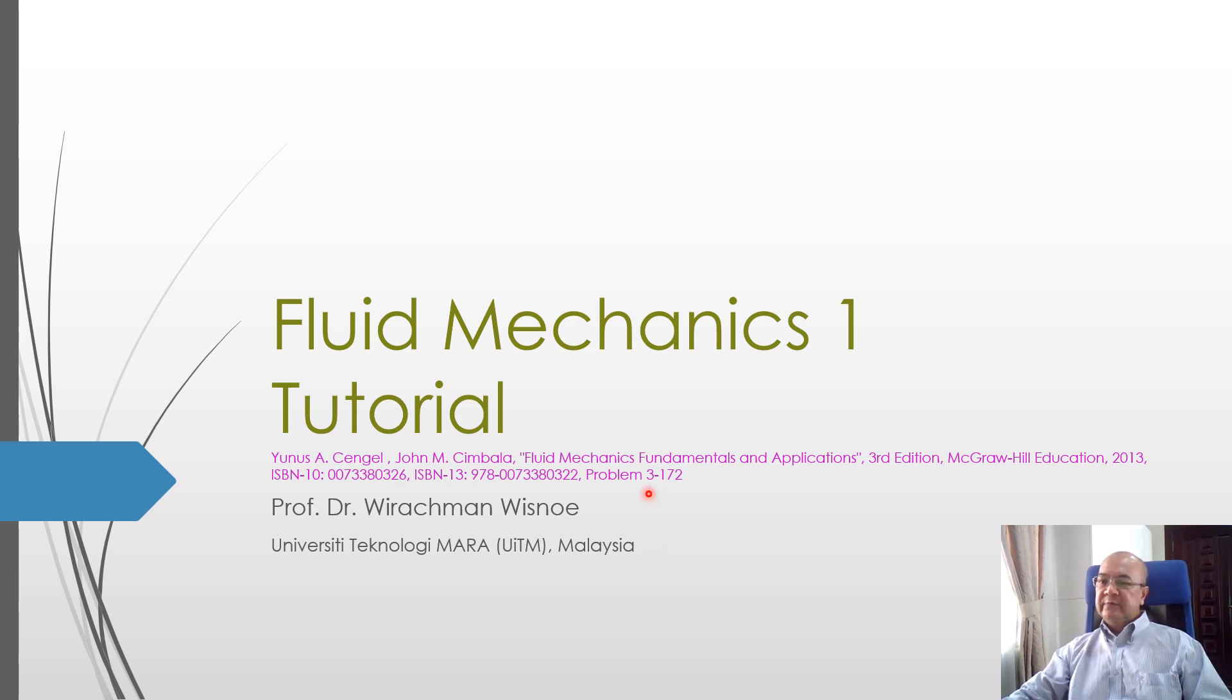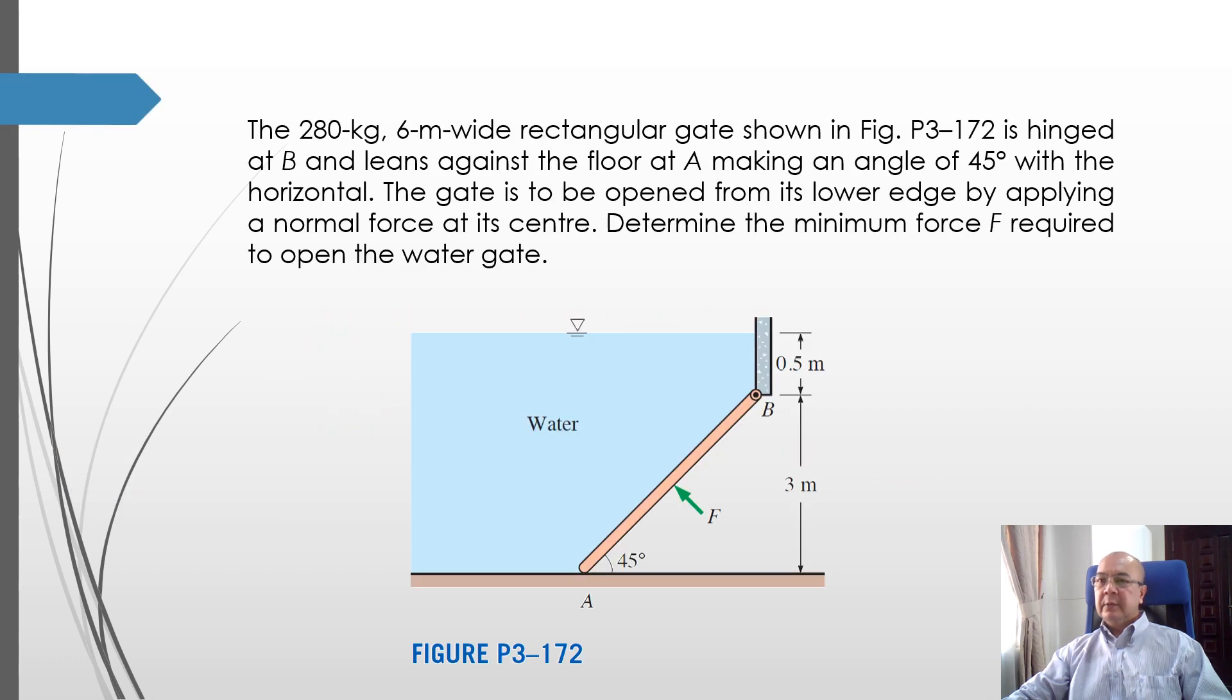In this tutorial we are going to solve problem number 3-172 from Cengel book, 3rd edition. The 280 kilogram, 6 meter wide rectangular gate shown here is hinged at point B and leans against point A on the floor, making an angle of 45 degrees with the horizontal. The gate is to be opened from its lower edge by applying a force F normal at its center. Determine the minimum force F required to open the gate.